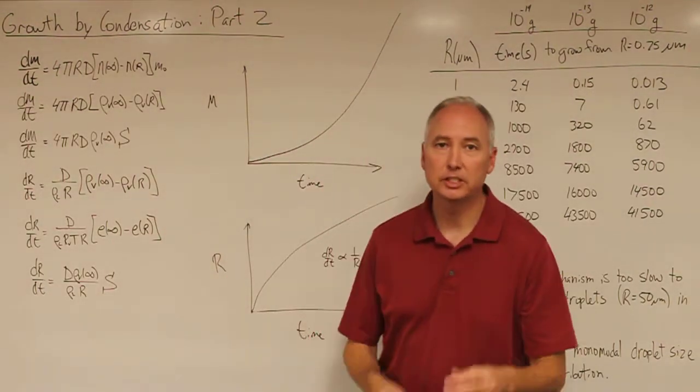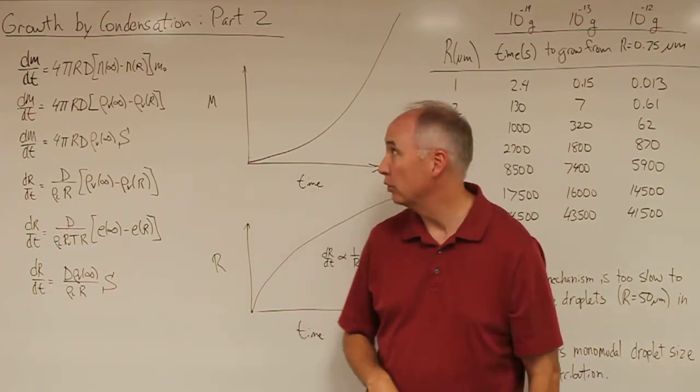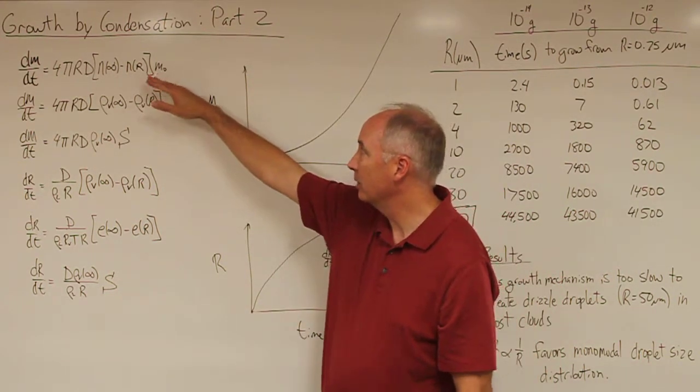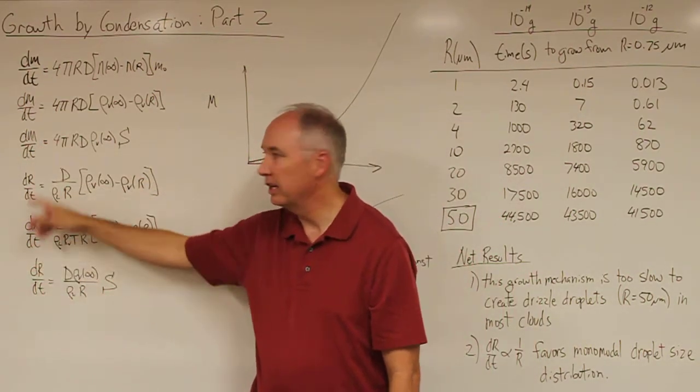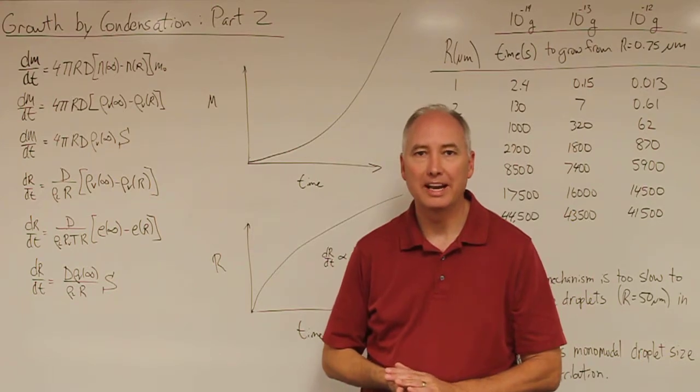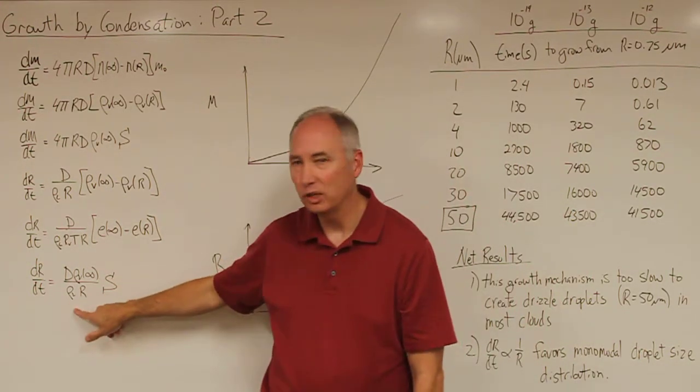In this lecture we're going to finish up the growth by condensation of an individual cloud droplet. We have our growth by condensation equations in terms of dM/dt and dR/dt, and I wanted to point out an error that I found in the last lecture and has to do with this last equation.